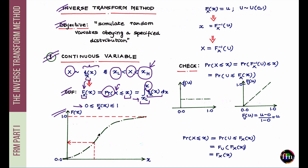The CDF may have flat regions where it fails to increase, but it never decreases. The reason is that the PDF is always greater than or equal to 0, and since the CDF represents the area under the PDF, it cannot decrease. Graphically, the CDF means: to find F_X(x), start from a chosen value of x on the horizontal axis, move vertically up to the point on the CDF curve, then read off the corresponding value on the vertical axis — that number is your probability.